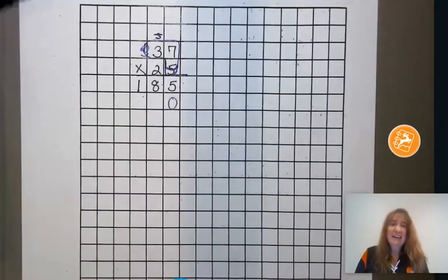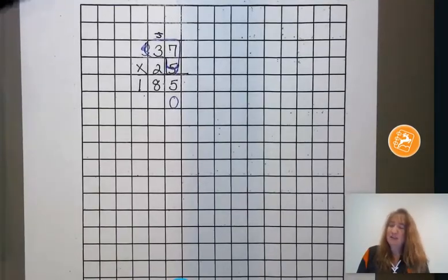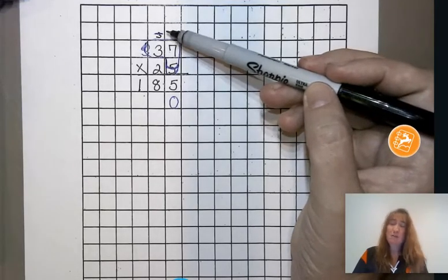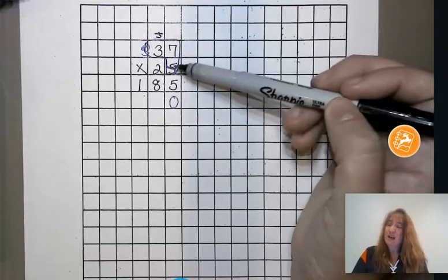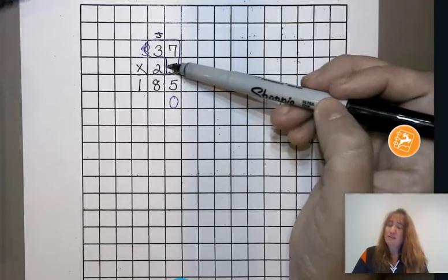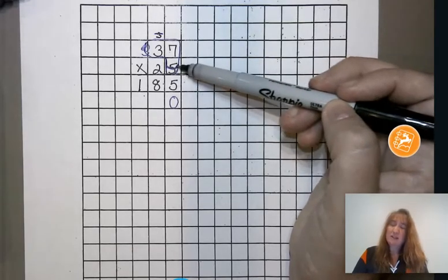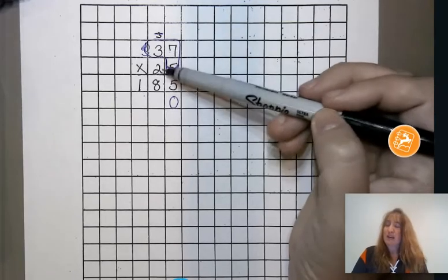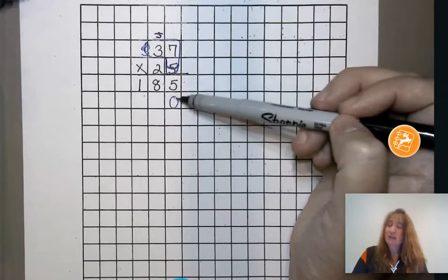Now the reason I have my students do that is because it kind of helps them remember to cross things out up here so they don't confuse that with any other numbers they might carry. And then what we do for giving a collar is so that they know we're done with that 5, don't look at that 5 anymore.